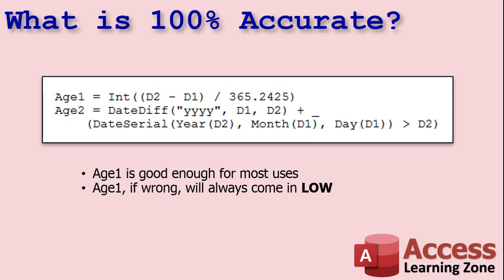I felt Age One was also good enough because the original questioner was checking IDs in a nightclub. Even if it's wrong, it's going to come in low. A 21-year-old might accidentally show up as 20, but never the other way around — you're never going to admit someone who's 20 when the calculation shows 21. So a quick check of their ID will fix that situation, which is why I think for that user, Age One is just fine.